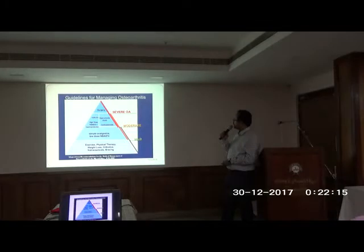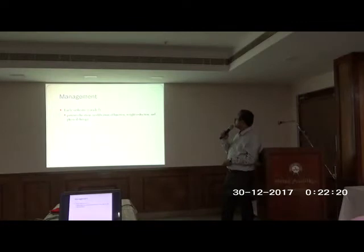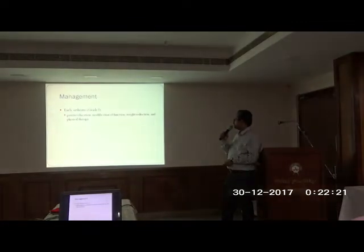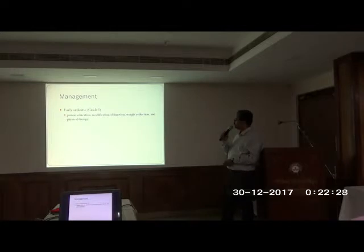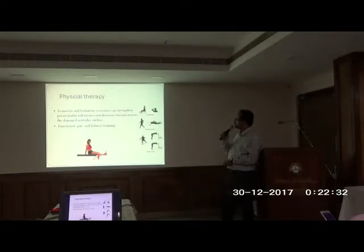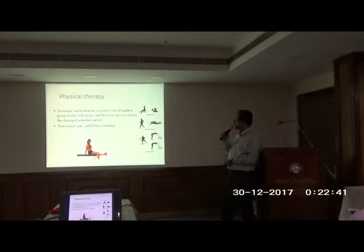This is the treatment pyramid for osteoarthritis. Starting from the base for mild osteoarthritis, the treatment is basically patient education, modification of function, weight reduction, and physical therapy. If you educate the patient, that itself will relieve most of the symptoms. Isometric and isokinetic exercises can be helpful, along with functional and gait balance training exercises.